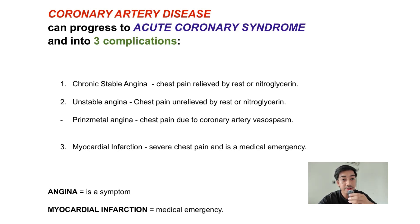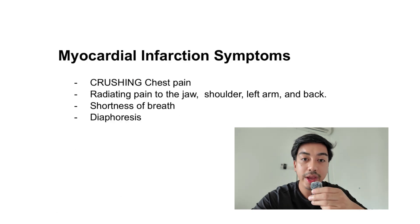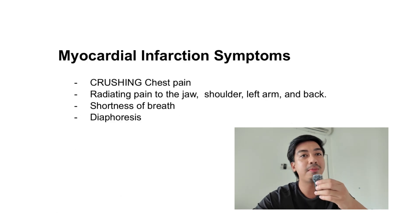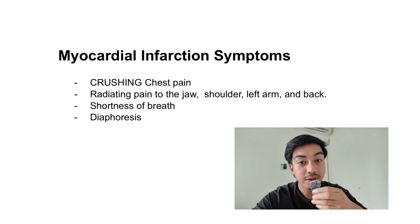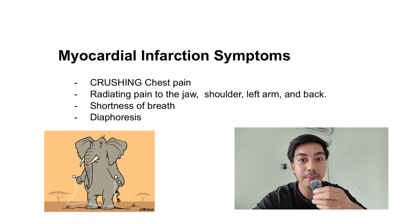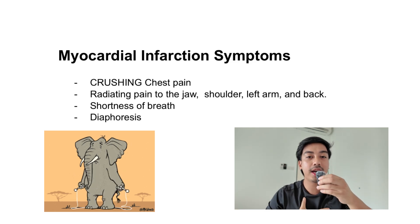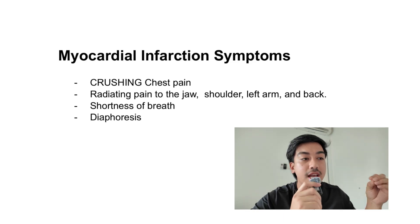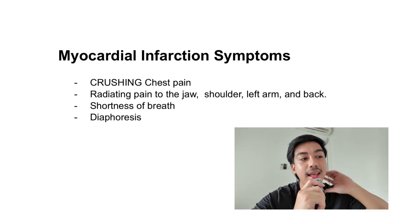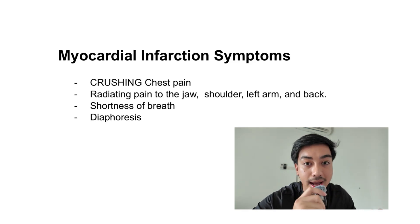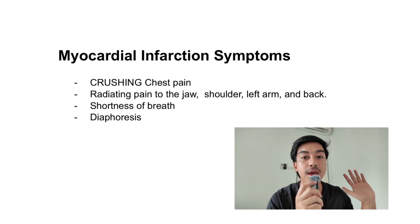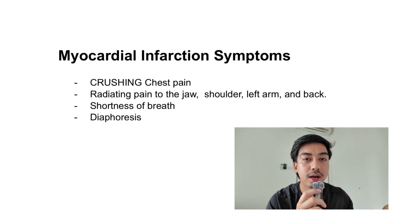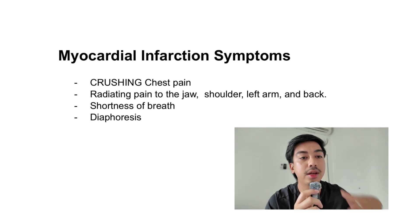What are the symptoms of myocardial infarction? Number one, crushing chest pain — this is the most common board exam question. It's described like an elephant thumping on the chest. It's a crushing chest pain that radiates to the jaw, neck, shoulder, left arm, and back. Patients with MI can also experience shortness of breath and diaphoresis, or excessive sweating.